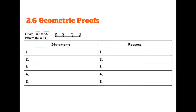For this proof, we always start with what we're given: segment RT is congruent to segment SU — and that's given. Now that we've used up all of our givens, it's time to start seeing what that does for us. My next step is going to be that ST is congruent to ST — it's congruent to itself. Any time something is congruent to itself, you can use the reflexive property.